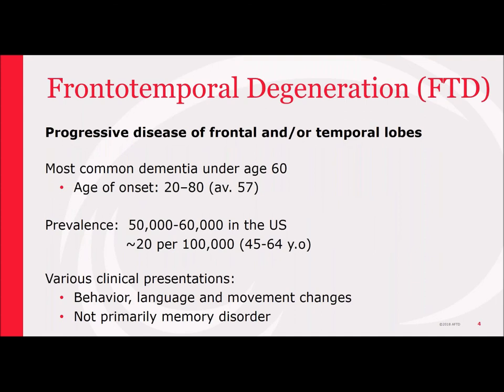Frontotemporal degeneration is a term that describes a progressive disease of the frontal and/or temporal lobes of the brain. This is a really complex and very heterogeneous group of disorders. FTD is the most common form of dementia under age 60. However, while the average age of onset is 58 or right in the mid-50s, there's a wide range — people have been diagnosed as early as in their 20s or as late as in their 80s. The best prevalence estimate we have right now is from 50 to 60,000 people in the US affected, or about 20 people per every 100,000.